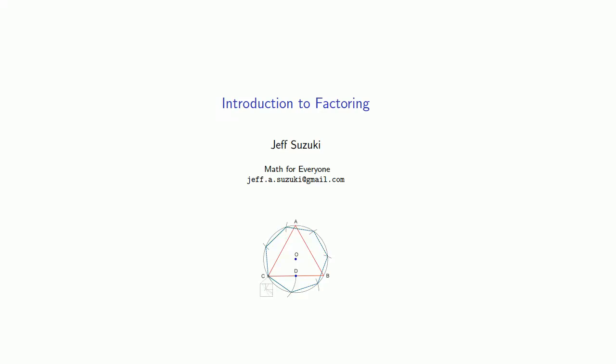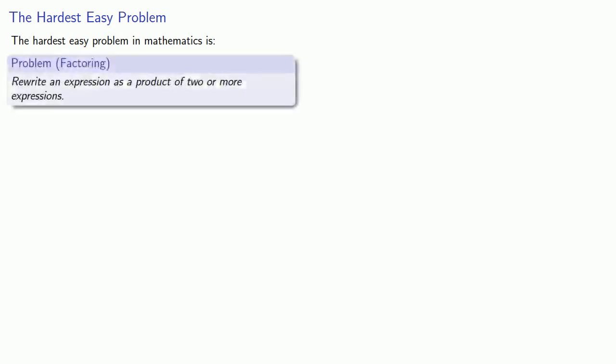One of the important things we need to be able to do in mathematics is to factor. And the bad news: the hardest easy problem in mathematics is the problem of factoring—to rewrite an expression as the product of two or more expressions. We say this is the hardest easy problem because it's very easy to explain what we want to do. We want to write something as a product. The difficulty is that it's actually very hard to figure out what those factors are.